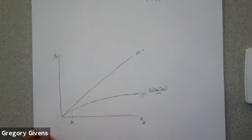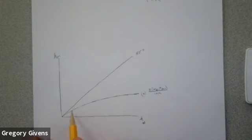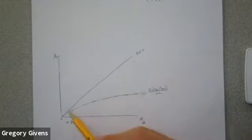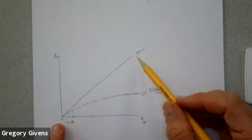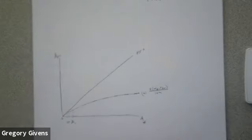Starting from some initial K_1, the capital stock is just going to fall until you get to zero, where I've drawn the 45-degree line to project K_{T+1} one period into the future.